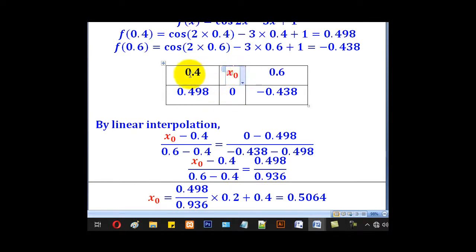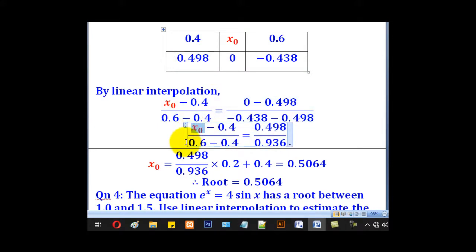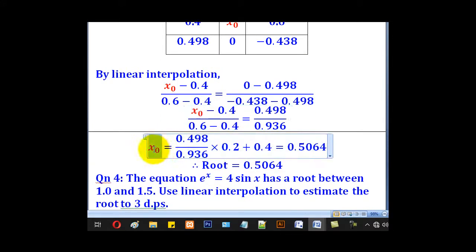In this case, we shall say (x₀ - 0.4)/(0.6 - 0.4) = (0 - 0.498)/(-0.438 - 0.498). When we simplify, we shall come up with x₀ = 0.5064, and that will be our root.